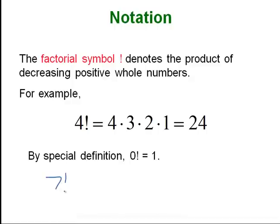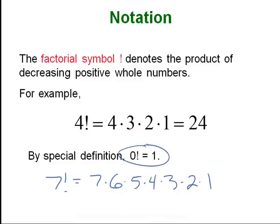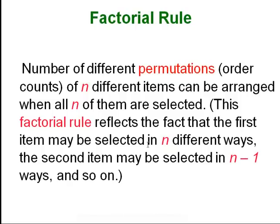So 7 factorial is just 7 times 6 times 5 times 4 times 3 times 2 times 1. By definition, we define zero factorial to equal 1. The factorial rule is talking about permutations, and we will see permutations and combinations during this lecture. A permutation means order matters — that is key. A combination is when order doesn't matter.